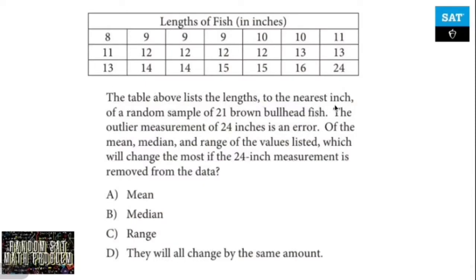The table above lists the lengths to the nearest inch of a random sample of 21 brown bullhead fish. Someone measured a bunch of fish - they got like 8, 9, 9, and so on, up to 16, and then somebody got a 24. The outlier measurement is 24 and it's an error.